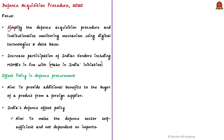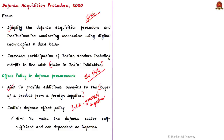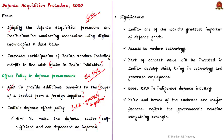It also has certain changes to the offset clause in defense procurement. In the defense sector, the concept of offset primarily aims to provide additional benefits to the buyer from a foreign supplier. India is one of the world's greatest importers of defense goods, so the potential value of offset is very high. The main objective of this offset policy is to make the defense sector self-sufficient and not dependent on imports, and to help Indian industries access modern technology.